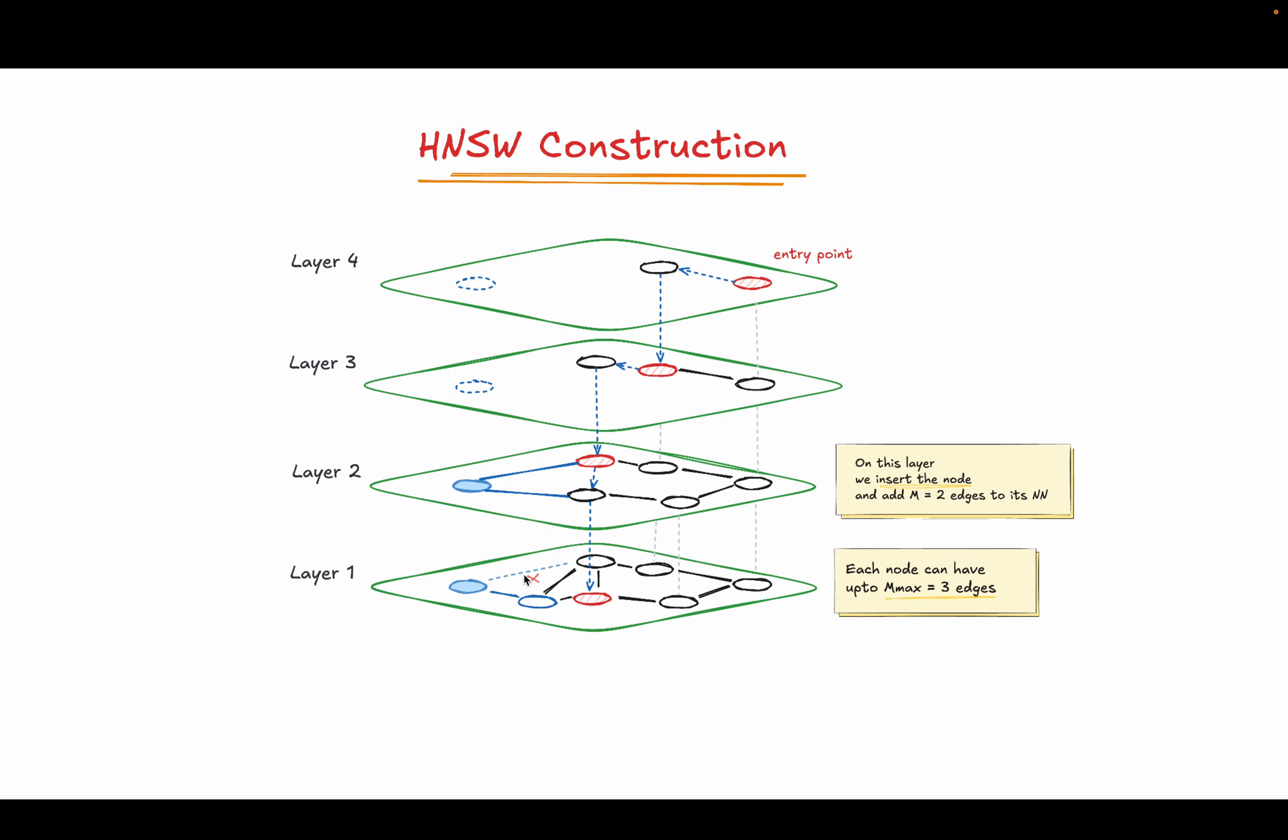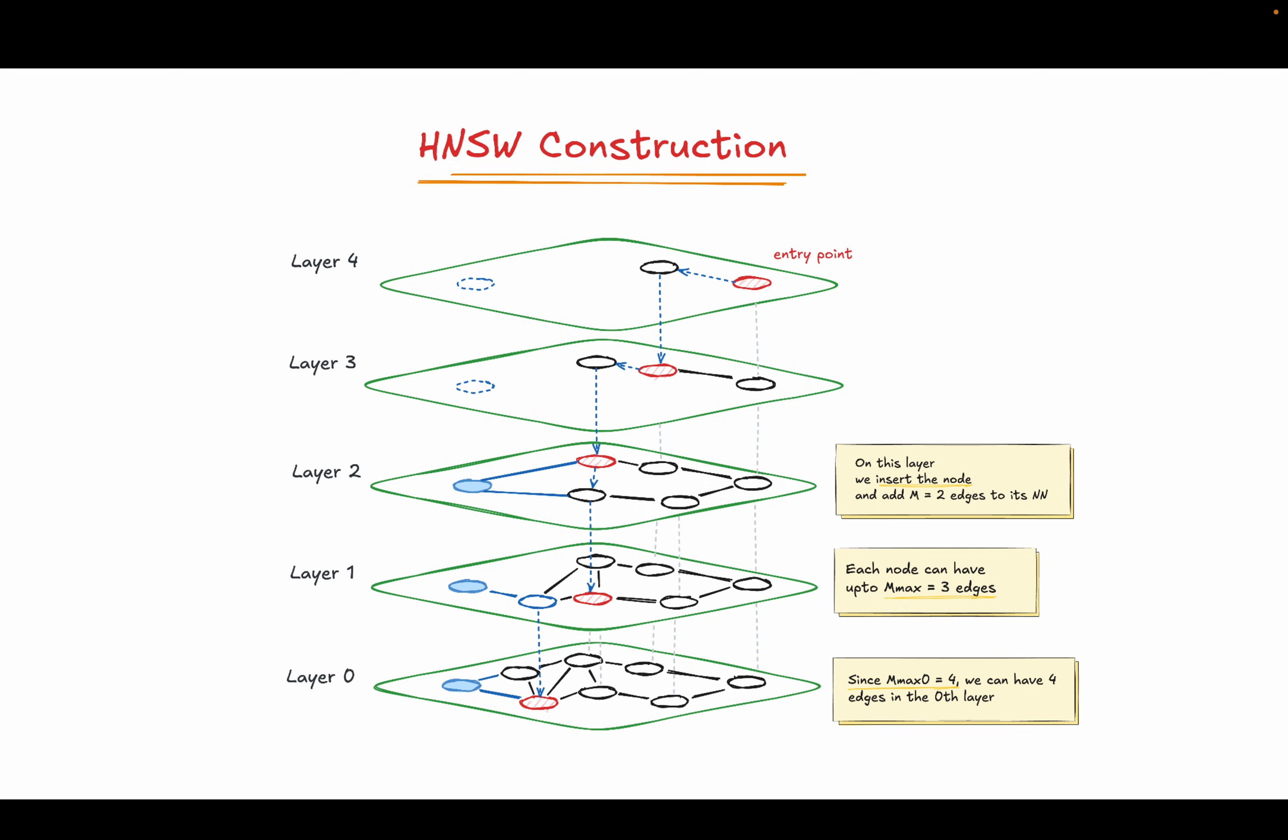We take this out. Now if you see, all the nodes have up to maximum three edges. Now we come to the last layer, which is the zero layer. And again, we do the same thing. This comes at the entry point to the last layer. We make the connections to the nearest neighbor. And over here, what you can see is that M max zero is equal to four. Now the difference between M max and M max zero is M max zero is referring only to the zero layer, and M max is referring to all the other layers. Now over here, it says that M max zero can have maximum four edges. So that is why over here, if any of the node has four edges, it's good. We don't have to do anything. We don't have to remove any edges. You can see that this has four edges and this also has four edges. So we don't do anything. We keep it as is. And this is how we construct the HNSW graph.